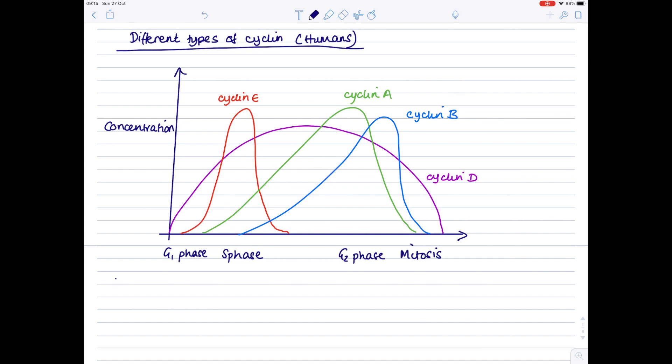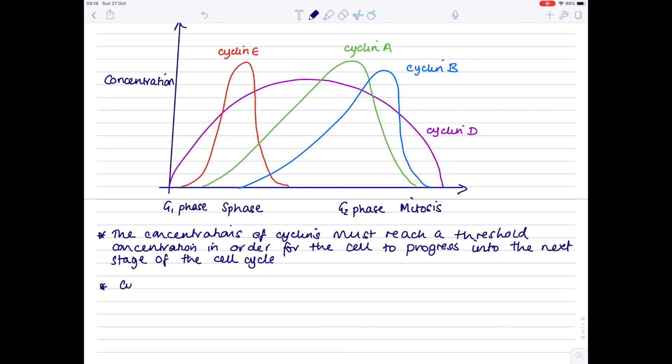The concentrations of cyclins must reach a threshold concentration in order for the cell to progress into the next stage of the cell cycle. Cyclins control the cell cycle and ensure that cells divide when new cells are needed, but not at other times.